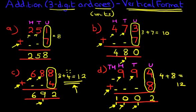And it really is that simple. And that is the addition of three-digit numbers and ones using the vertical format.